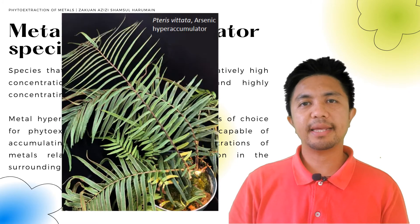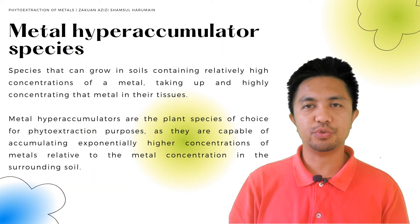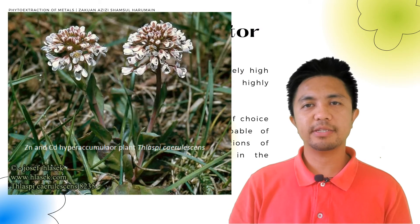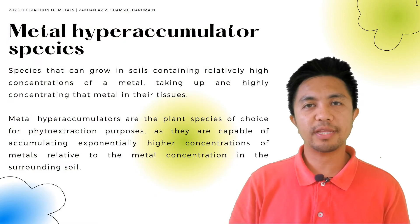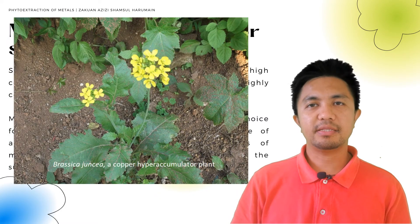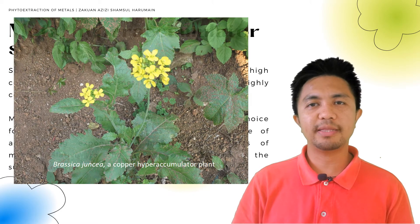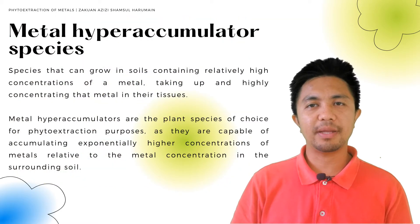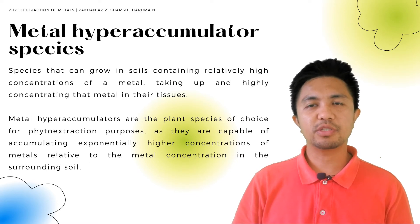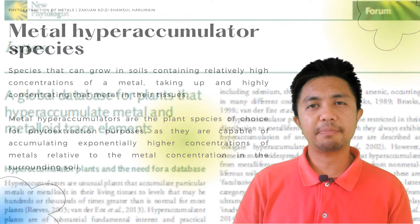Metal hyper accumulators are plants that can grow in soils containing relatively high concentrations of metals, taking up and highly concentrating that metal in their tissues. Metal hyper accumulators are the plant species of choice for phytoextraction purposes as they are capable of accumulating exponentially higher concentrations of metals relative to the metal concentration in the surrounding soil.